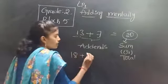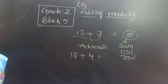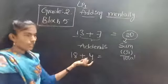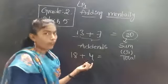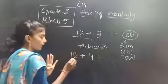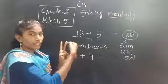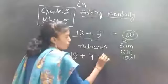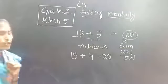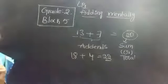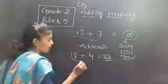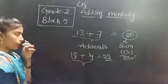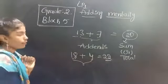One more example — here I have 18 plus 4. How can you find the sum? Keep 18 in your mind; take the small number as fingers. 18 is the big number, 4 is the small number — take 4 as fingers. So from 18, count forward: 19, 20, 21, 22. So which number did I reach? 22. So 22 is the total. 18 plus 4 is equal to 22.